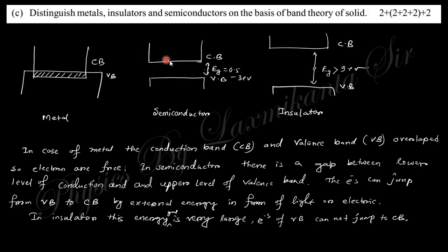If we apply external energy, electrons from the valence band can jump into the conduction band. But in the case of insulators, the energy gap is very large, so electrons cannot jump from valence band to conduction band by applying external energy, that is, heat or light, etc. That is the difference between metal, semiconductor, and insulator.